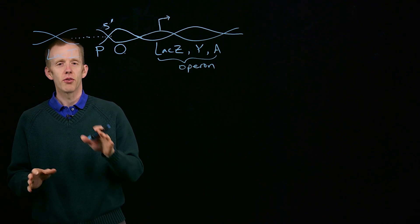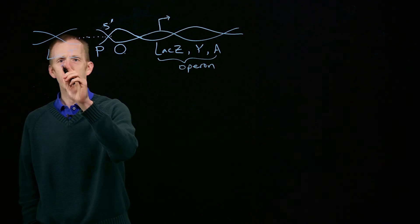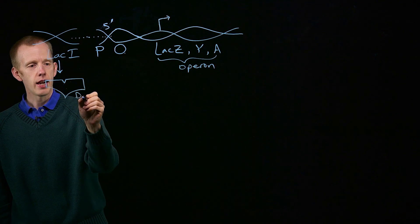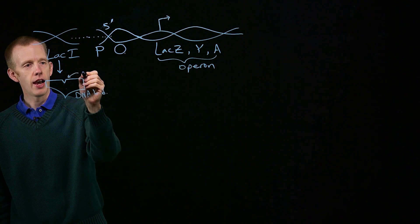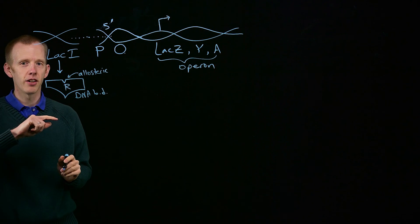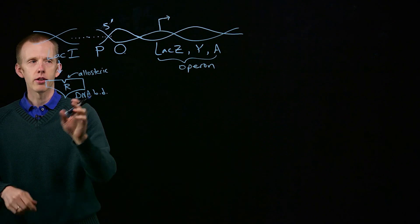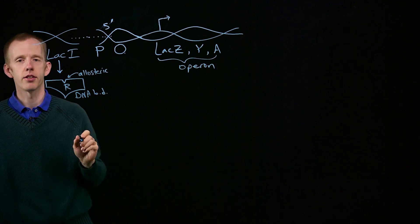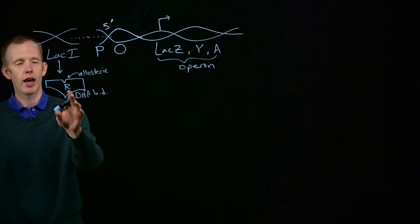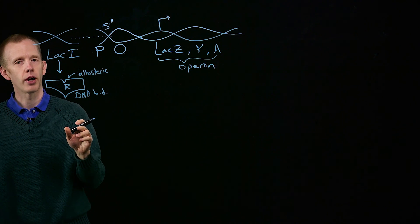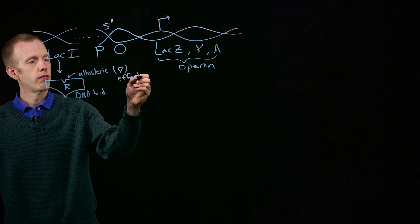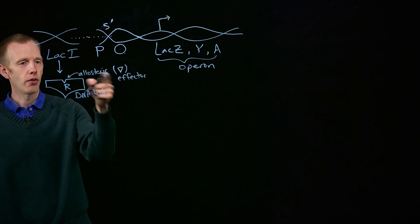As geneticists, we're interested in how DNA sequence changes affect this system. LacI produces the lac repressor molecule, which has a DNA-binding domain and an allosteric site. Mutations can affect lac repressor, and remember, lac repressor interacts with the lac operator sequence upstream of the lac operon. There are a few types of mutations that can change how lac repressor turns off production of lacZ, lacY, and lacA, and how lactose as the effector changes the shape of lac repressor.